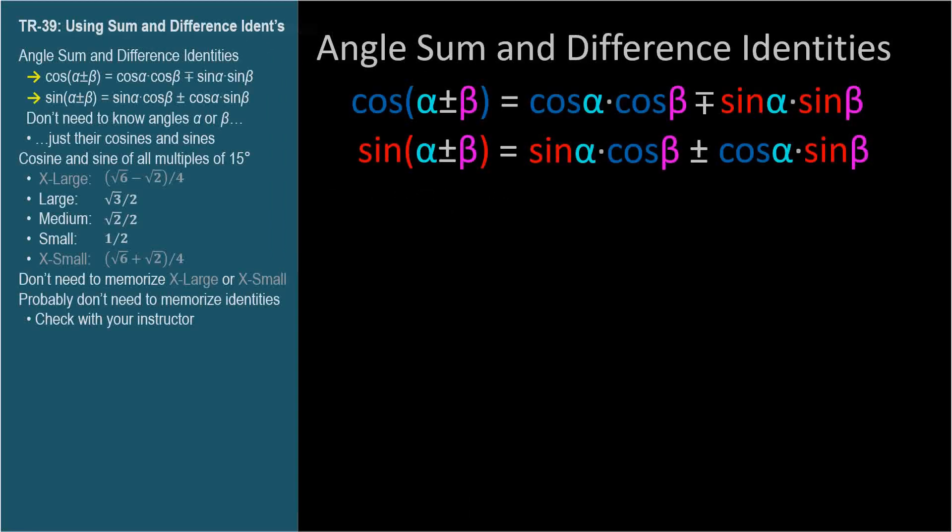Here are the angle sum and difference identities we introduced and proved in the last video. Let's try them out. We'll use common angles we already know so we can anticipate the result and know that the identities work. I'll include an obtuse angle so you can see that these identities work for all angles.